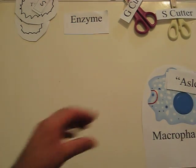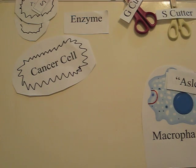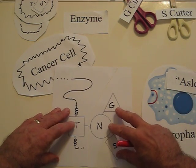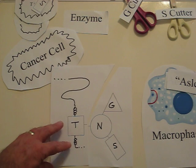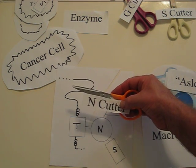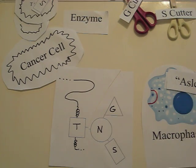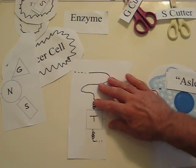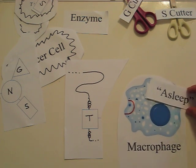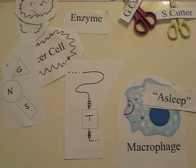We're going to look at what happens with a cancer cell. The cancer cell comes up to that same GC protein that we started with. It releases an enzyme, an N-cutter, and it cuts all three sugars off. So there are no sugars on this molecule, and it cannot bind to the sleeping macrophage, and it cannot activate it.